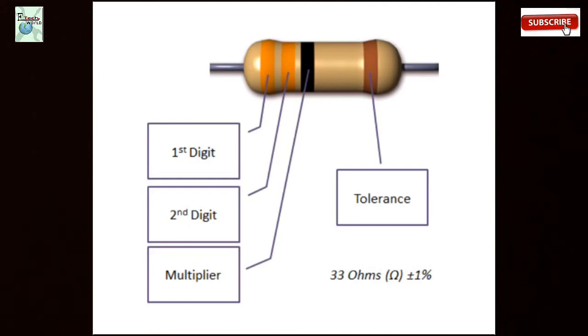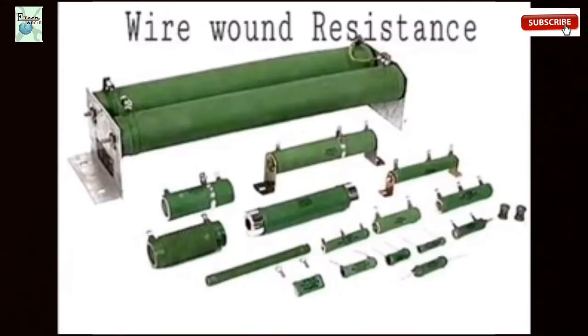the second color is the second significant value, and the third is the multiplier factor. The final is the tolerance value. Next, I am going to explain the types of resistors. For the first one, the wire wound resistor,